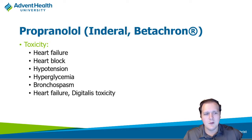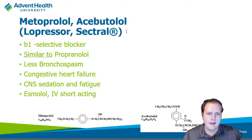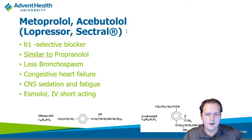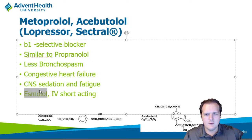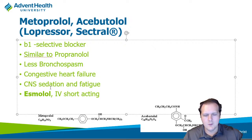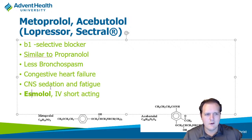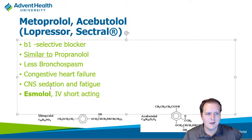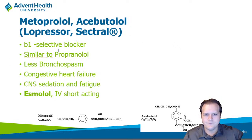Cardioselective beta blockers like metoprolol, acebutolol, and esmolol are useful here. Esmolol is a short-acting IV agent — brand name Brevibloc — used frequently for SVT. Being short-acting allows easy dose titration: if the patient gets hypotensive, drop the dose; if they go back into SVT, increase it. Beta blockers are a preferred class for patients with MI, but should be skipped if they're bradycardic or hypotensive during the acute MI phase.